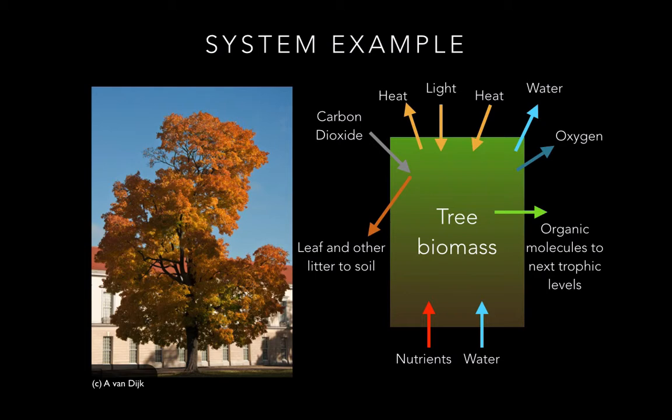This tree is an example of a system. The tree itself is represented by a box representing the biomass of the tree. The arrows going in represent anything that goes into the tree: carbon dioxide, light, heat, water, nutrients.